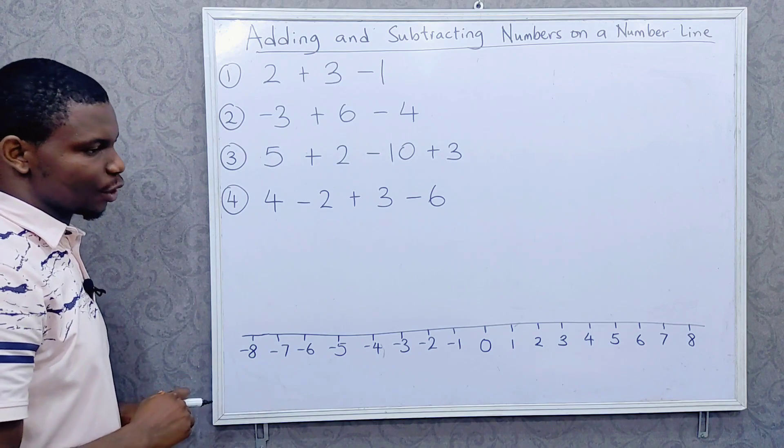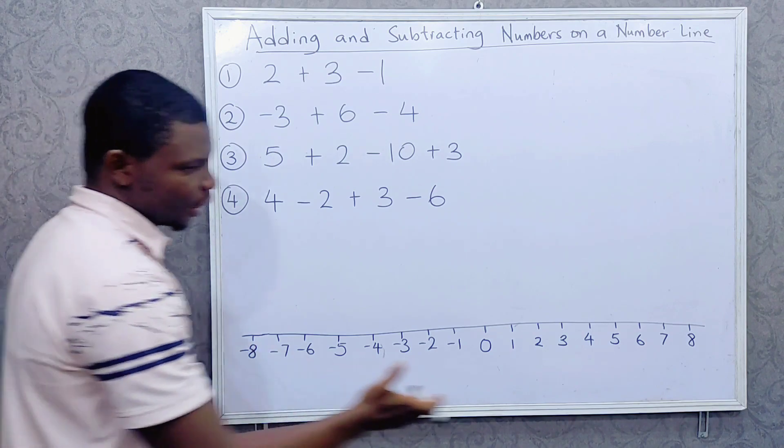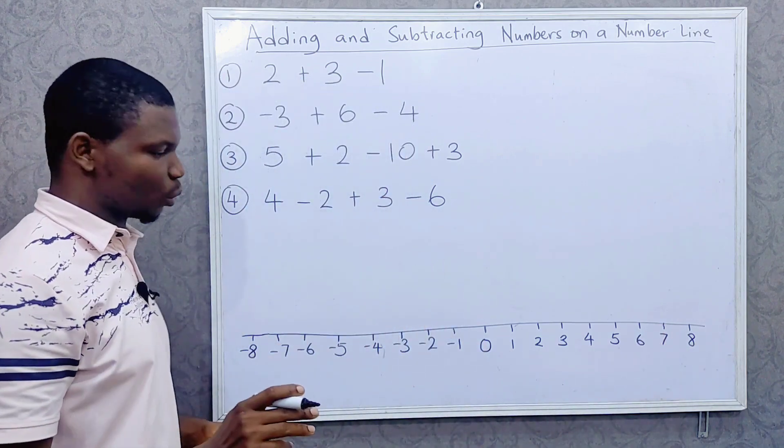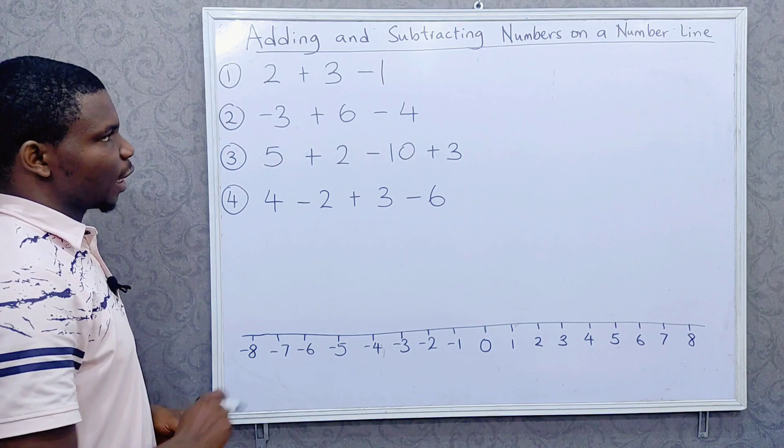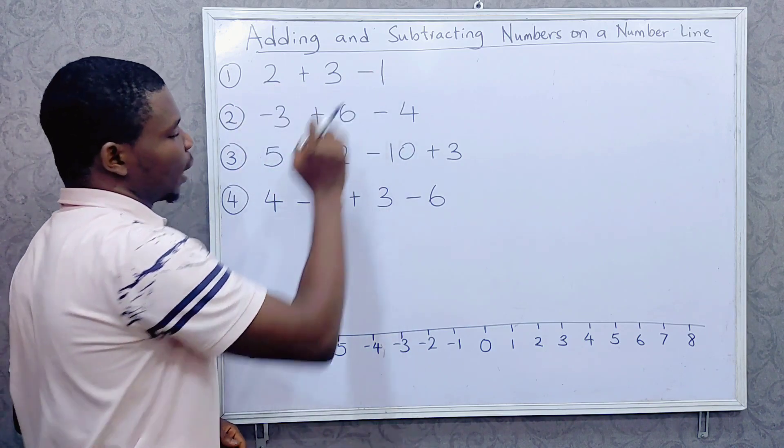Adding and subtracting numbers on a number line. The numbers don't end at minus 8 and 8. You can keep drawing as long as you want. Now, from the first one, 2 plus 3 minus 1.